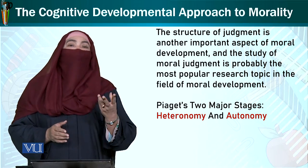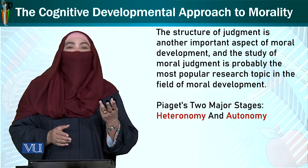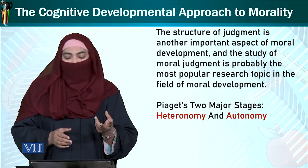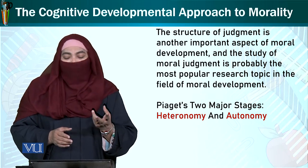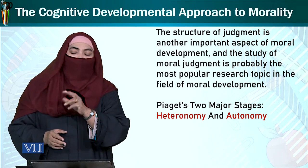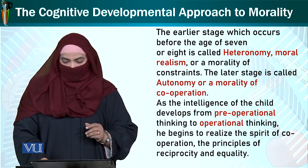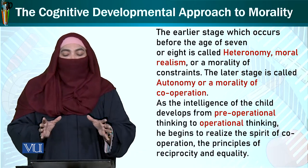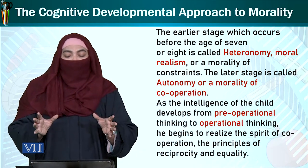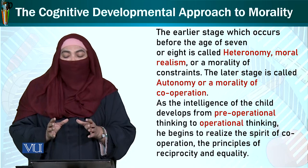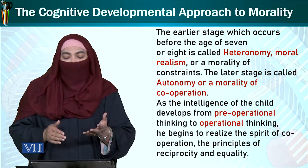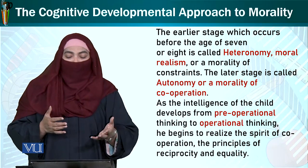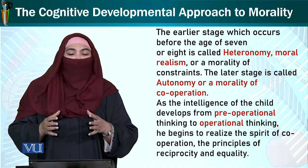Piaget's two major stages jo woh morality ke hawaale se deta hai: ek toh ismein heteronomy hai, aur doosri autonomy hai. The earliest stage, which occurs before the age of seven or eight, is called heteronomy — that is, moral realism, or a morality of constraints.